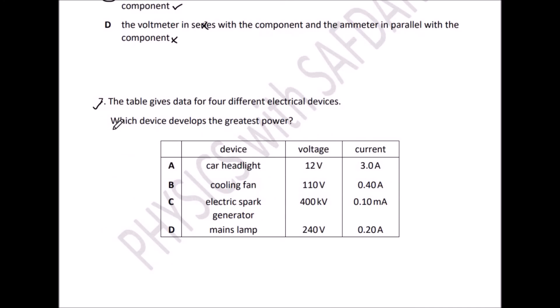Question number 7: The table gives data for four different electrical devices. Which device develops the greatest power? In this column, you have name of devices: car headlight, cooling fan, electric spark generator, and mains lamp. Second column, voltage and third column, current. To calculate the power, we use this simple formula: voltage times current. So multiply voltage with current one by one.